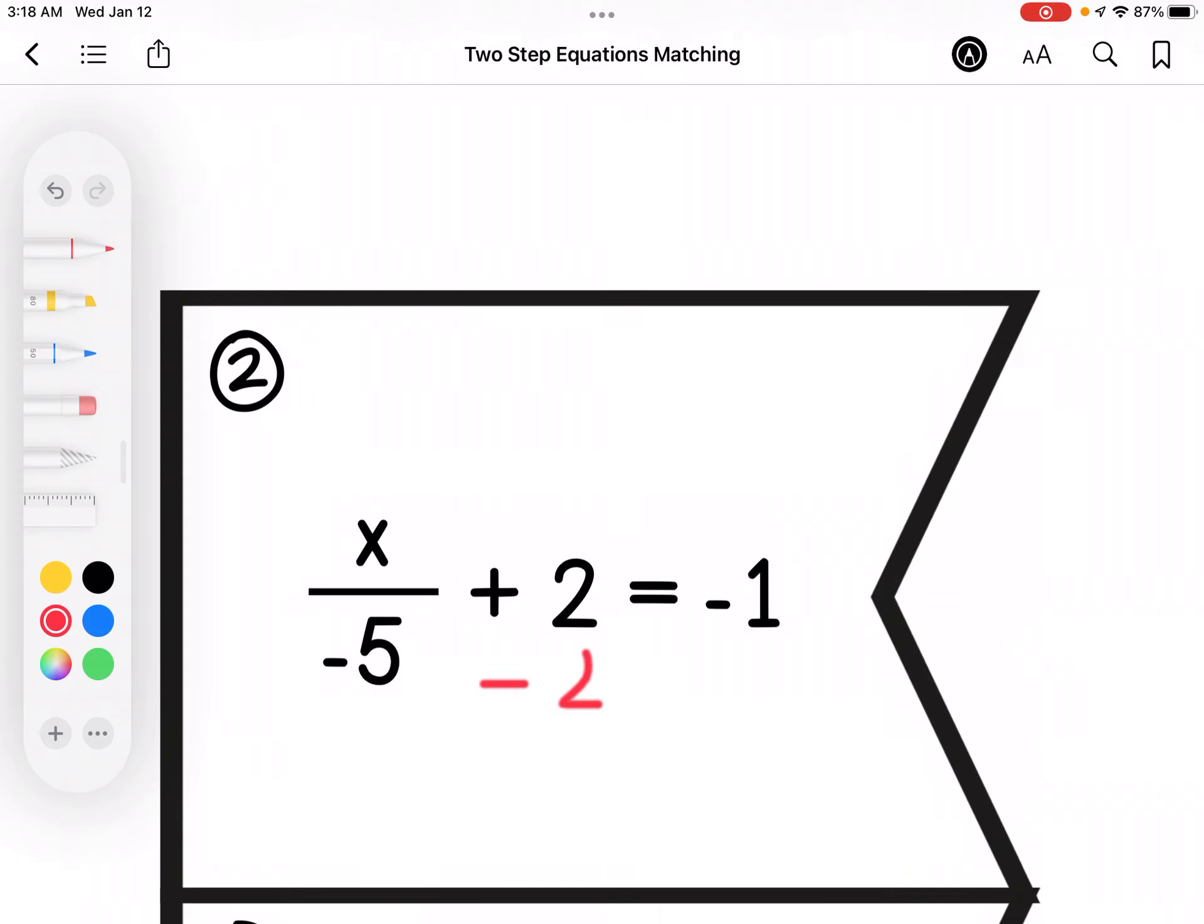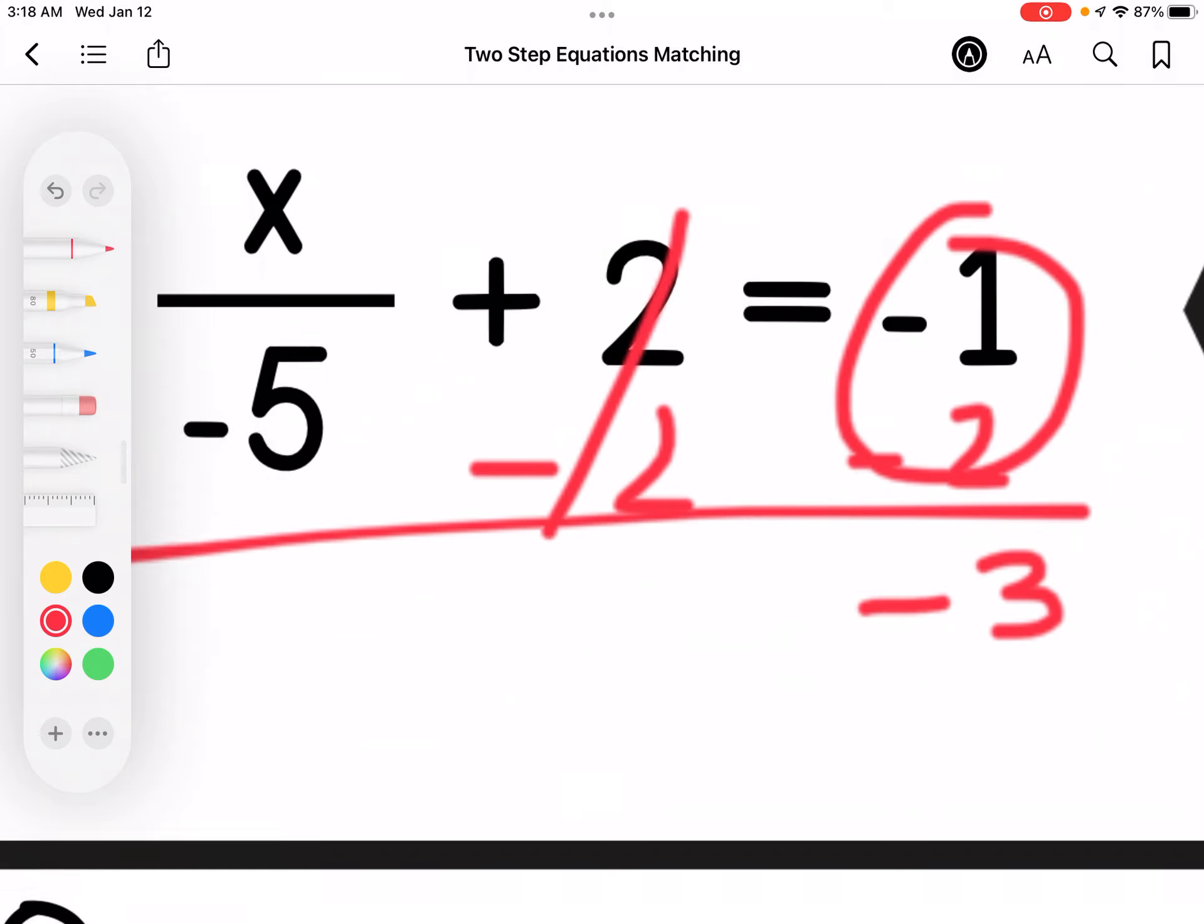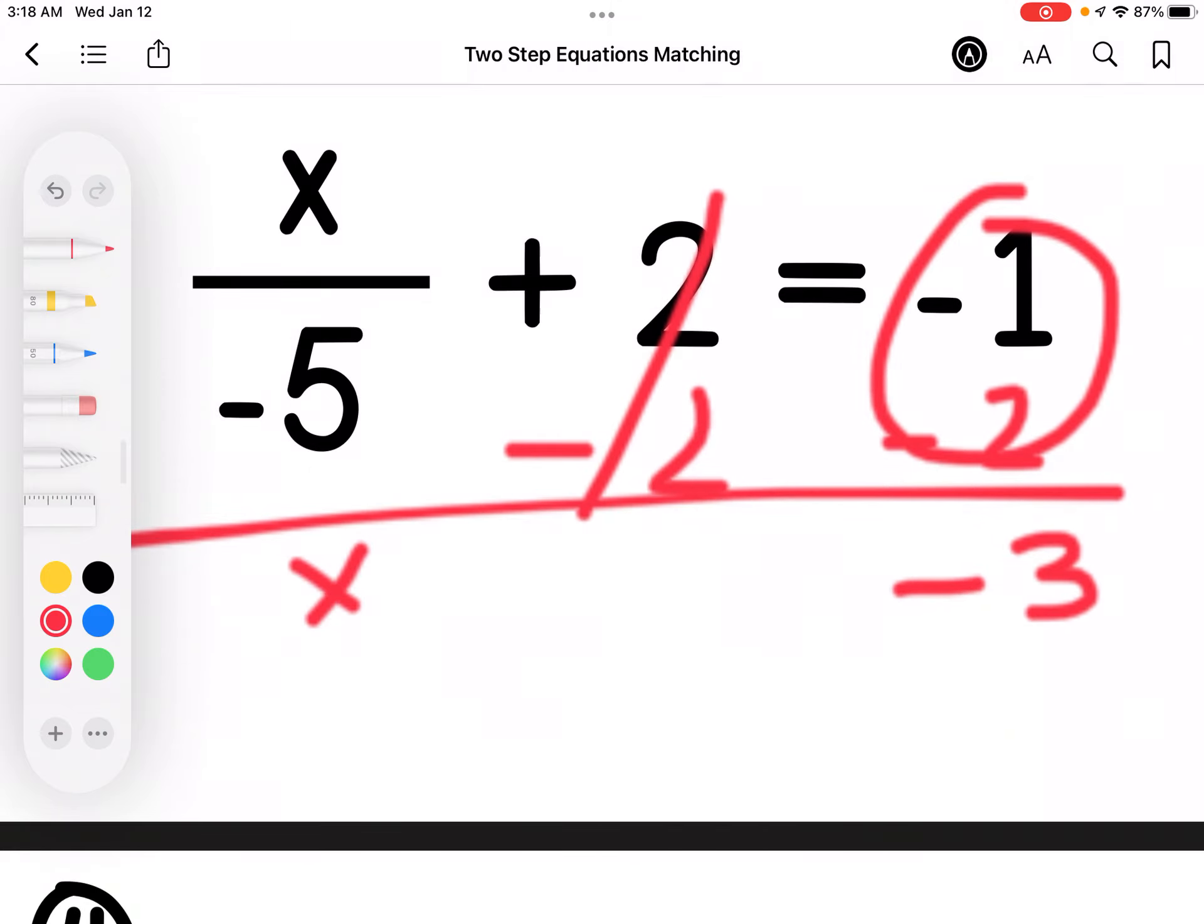I'm going to subtract 2 on each side. So I get negative 3. Because the signs are the same, I have to add. If I divide by negative 5, the opposite is to multiply by negative 5, or the inverse operation. And I get 15.